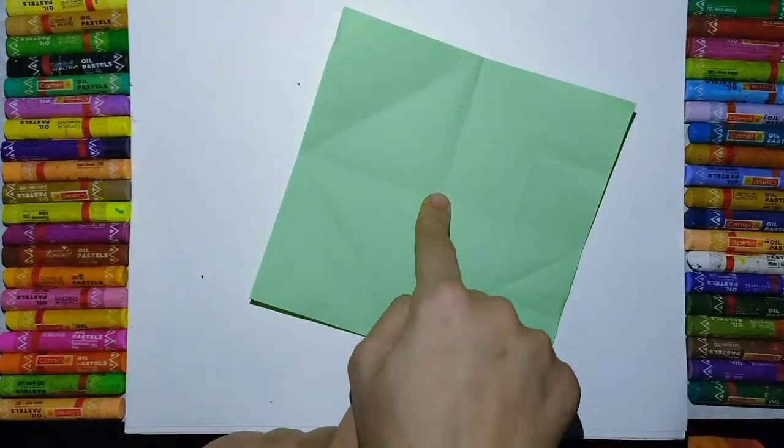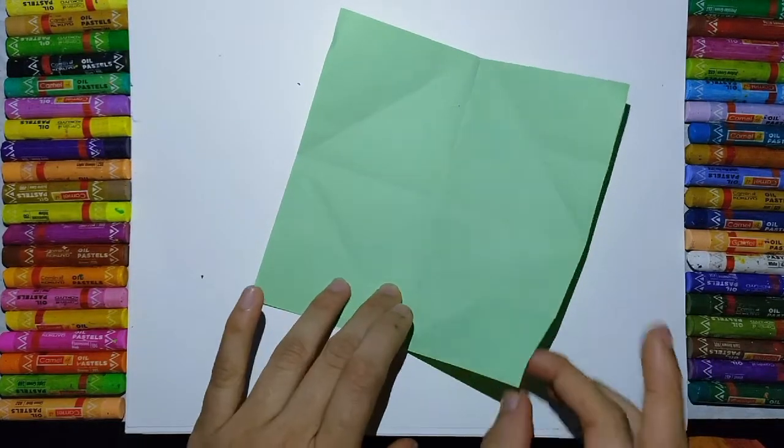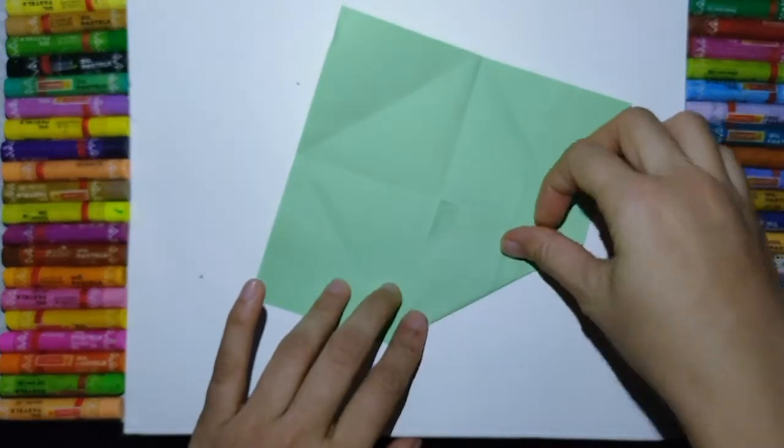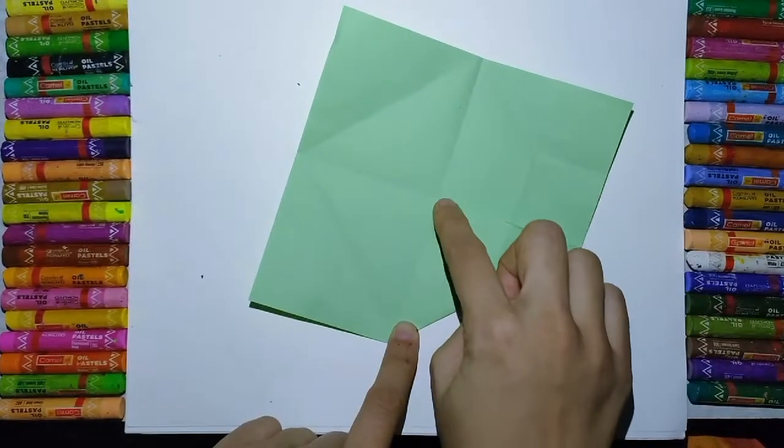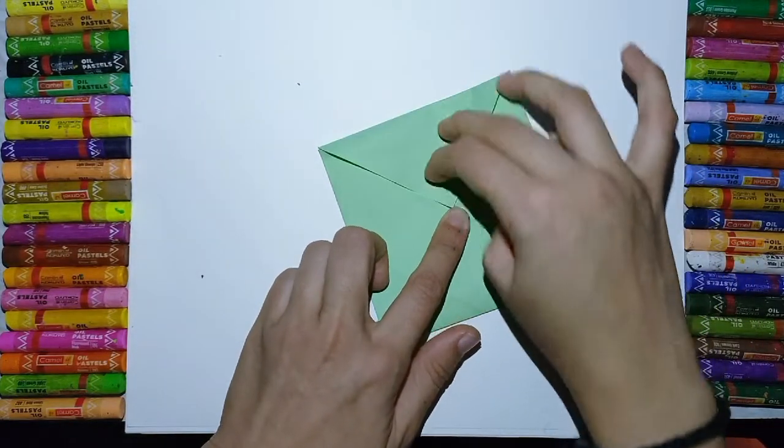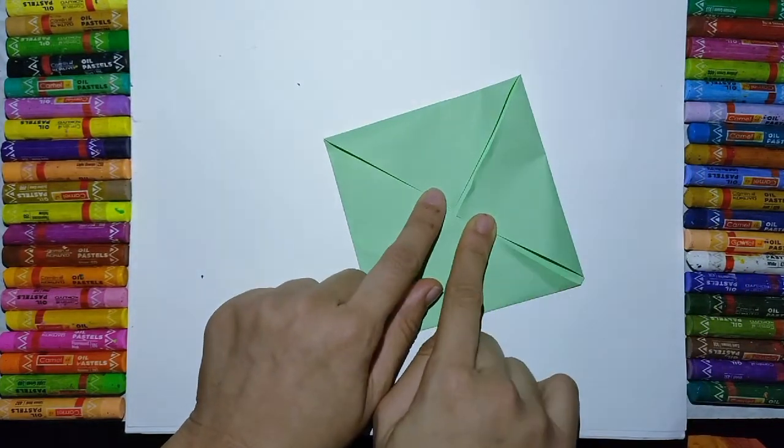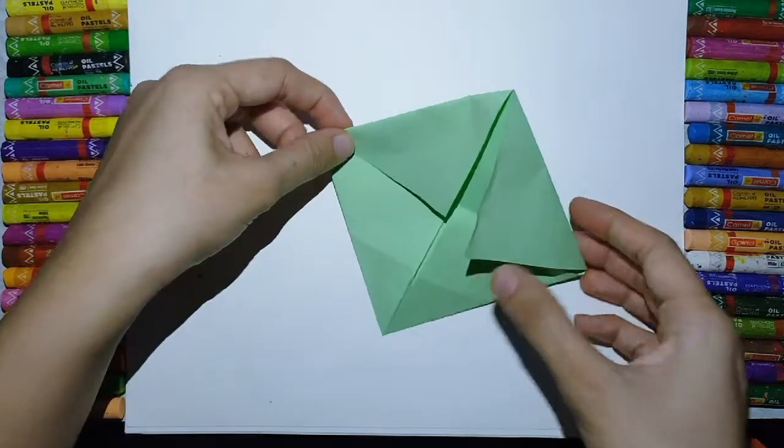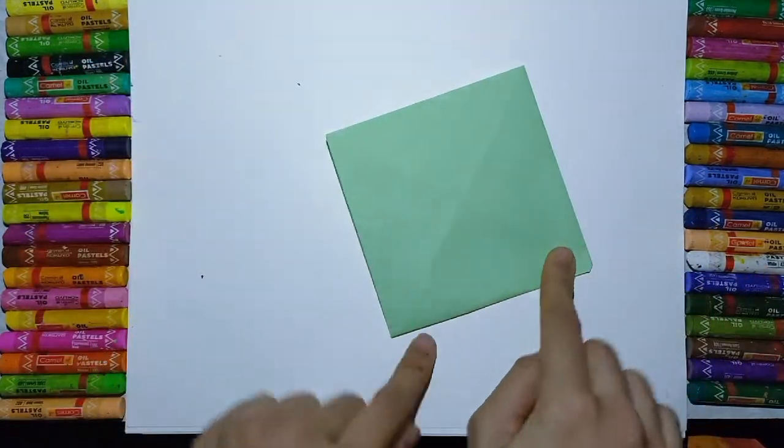Now fold this corner at the center of the paper. In the same way, fold all the corners at the center of this paper. Clear everyone? Now turn the paper back.